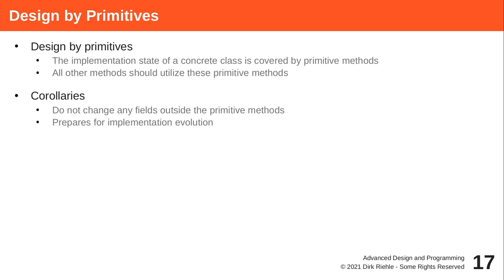Starting with a call chain at the interface — some template or combined method — you have a chain from composed to composed and eventually to primitive methods, which are the leaves of the call tree. Those are the effective final encapsulators of the implementation state, and you should not change the implementation state outside of those primitive methods.